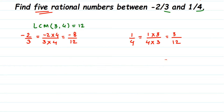So to summarize: first check if the denominators are the same or not. If not, take the LCM and make them the same using equivalent rational numbers. Do this for both numbers, and then you can pick any rational numbers between them.